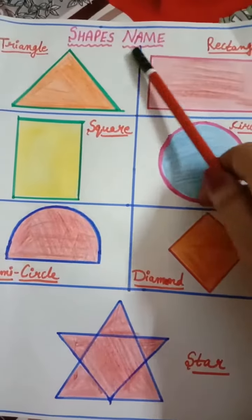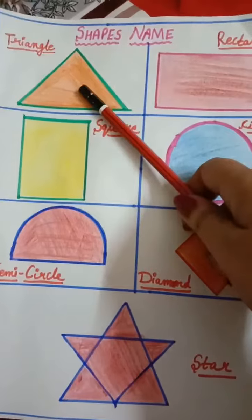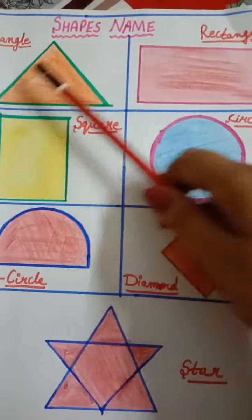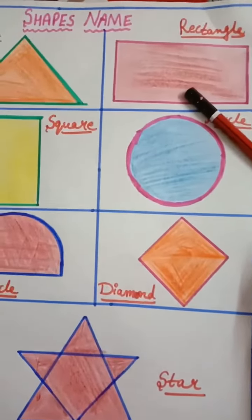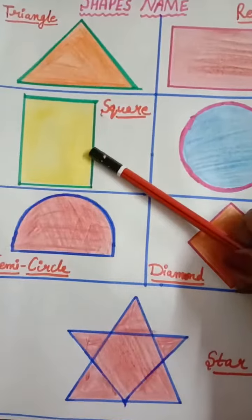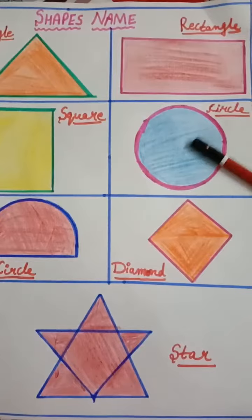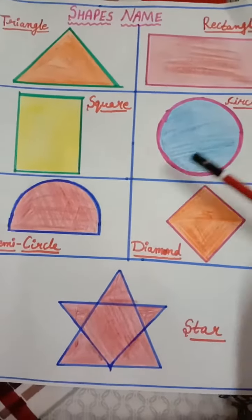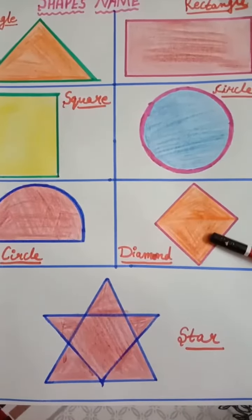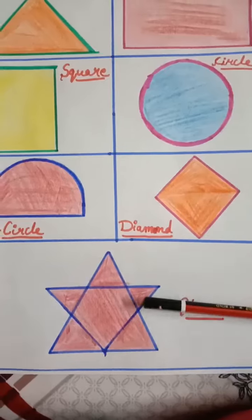First shape is triangle. This is called a triangle. Then next is rectangle. This is a rectangle. Then this shape name is a square. Then next is a circle. This is a semicircle. This is a diamond shape. And the last one is a star shape.